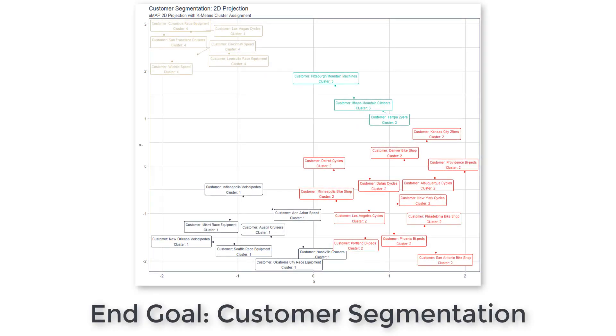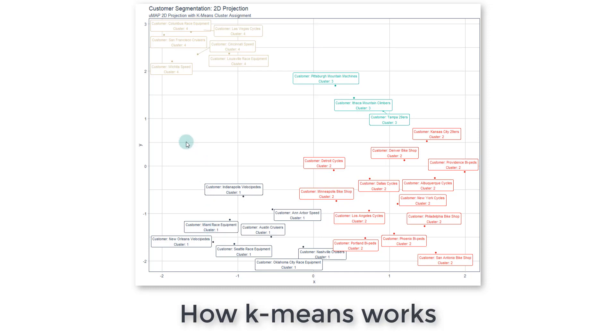So what I want to do is show you what the end goal is before we get started with the K-Means algorithm, because this is going to explain kind of where we're going, what we're going to implement with the K-Means algorithm and then also the UMAP. So what the K-Means algorithm does, and you can see this chart that we have here, it's the customer segmentation, a 2D projection, and what K-Means is doing is it's grouping these customers into different clusters.